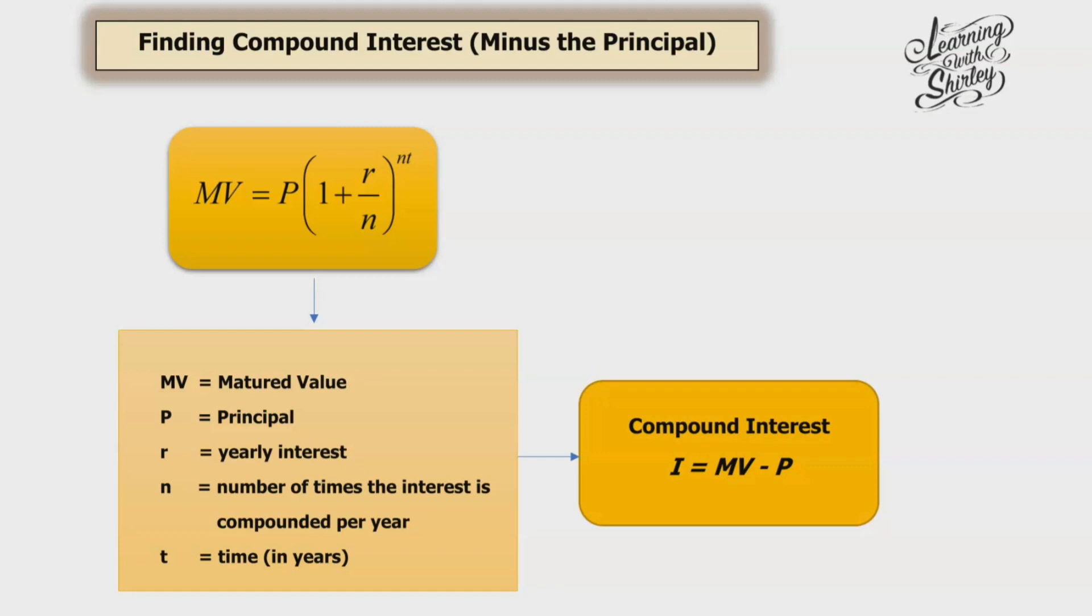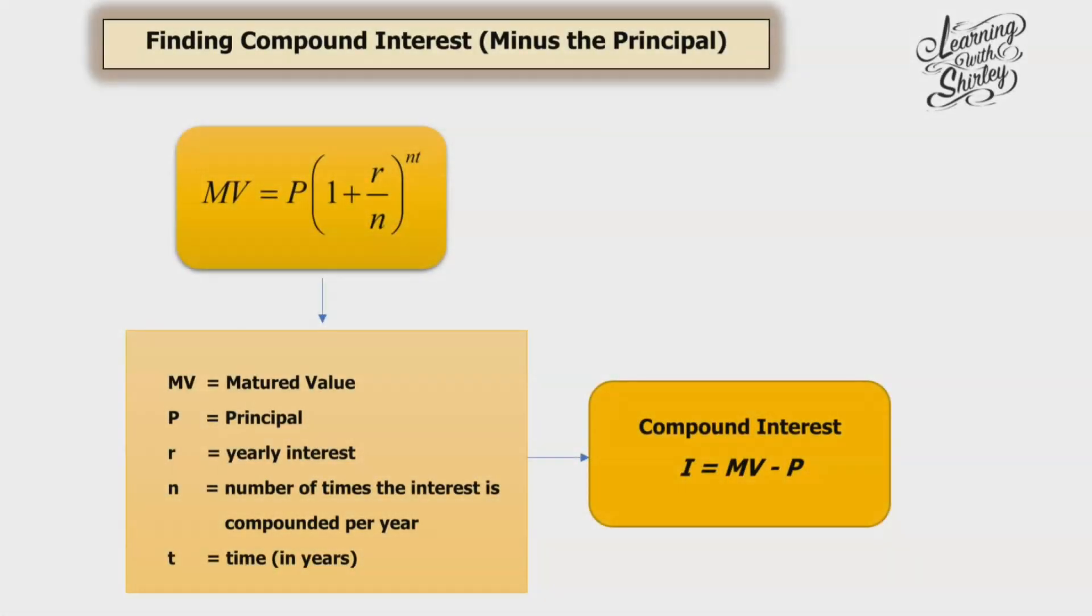First of all, we need to memorize and understand this formula. Let's look at this formula: MV equals to P bracket 1 plus r over n, the whole thing to the power of nt.